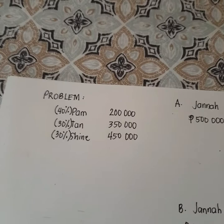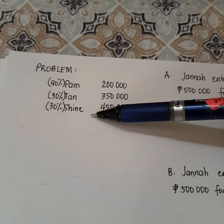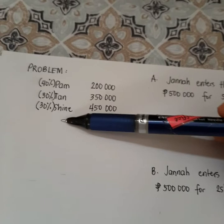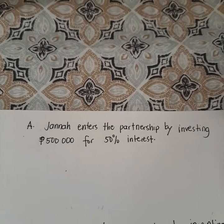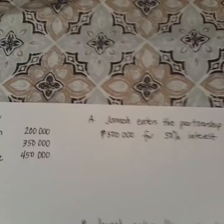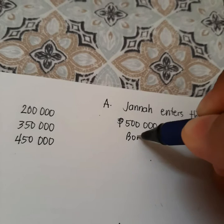Let's go master our dissolution tools. We have a problem here with different situations prepared. PAM, TAN, and SHINE are partners in a partnership having 200,000, 350,000, and 450,000 capital, sharing profits in the ratio of 40%, 30%, and 30% respectively. On Scenario A, JANA enters the partnership by investing 500,000 for 50% interest — this is admission by investment. We'll use the bonus method and revaluation method.